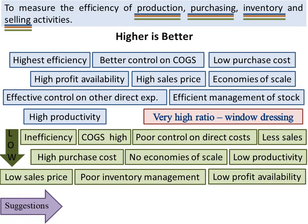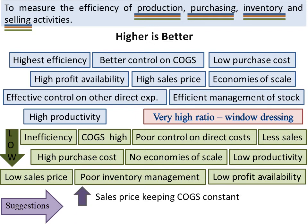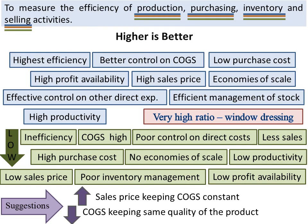To improve this ratio, the firm has to apply any of the following measures. If a firm is not able to control its cost of goods sold, it has to increase selling price keeping cost of goods sold constant. If due to competition in the market the firm is not able to increase selling price, then it has to reduce cost of goods sold by proper study without compromising with quality of product. And if possible, the firm can slightly increase the selling price and decrease the cost of goods sold.